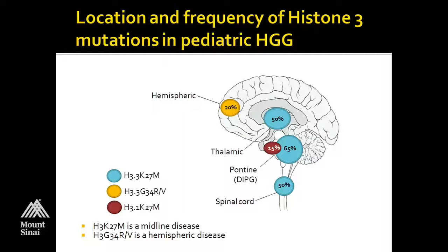If we look at where these mutations are found, we see some really interesting patterns. The yellow balls show the G34 mutations — H3.3 G34R — where about 20% of hemispheric GBMs in pediatrics will harbor that mutation, whereas in the midline we basically never see that.